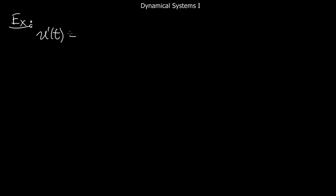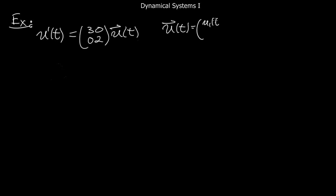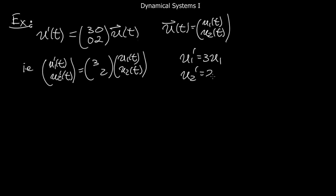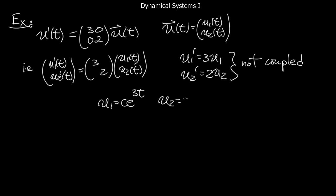Let's do an example. Suppose the equation is u'(t) = A·u(t), where A is the diagonal matrix with entries 3 and 2. Writing u(t) as a 2-vector [u₁, u₂], this gives two separate equations: u₁' = 3u₁ and u₂' = 2u₂. They don't have anything to do with each other — this is not a coupled equation. You can solve them separately: u₁ = c·e^(3t) and u₂ = d·e^(2t).